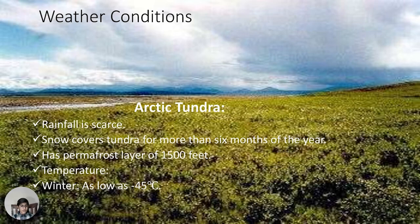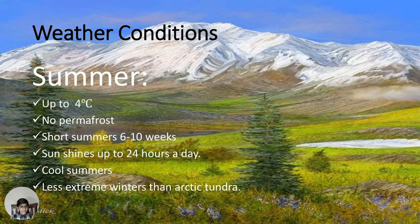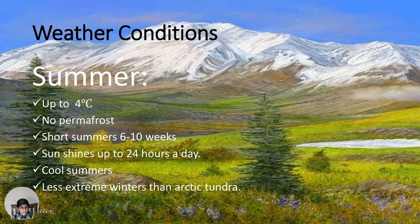Tundra is covered in snow with little sunlight for much of the year. Summer in tundra lasts only six to ten weeks, with temperatures up to 4 degrees Celsius. During summer, the sun can shine up to 24 hours a day, but the summer remains cool. Alpine tundra has less extreme winters than Arctic tundra.